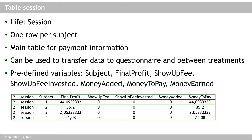The session table has predefined variables including final_profit, show_up_fee, show_up_fee_invested, money_added, and money_to_pay — but notably no period variable. The final_profit variable tells you what the profit at the end of the experiment should be paid to the subject. Multiply this by the exchange rate to get the actual currency payment from all treatments. The session table can also be used to transfer data to the questionnaire.